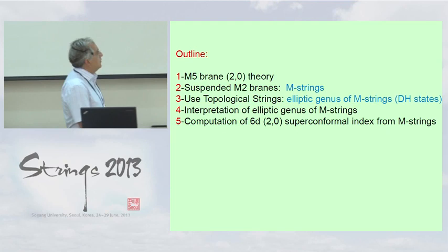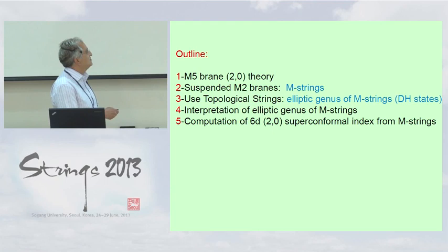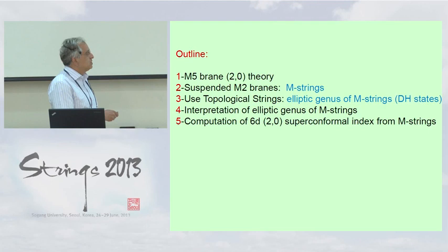The outline is: first I want to talk about aspects of the M5 brane and two-zero theory, which by now has been thoroughly reviewed in past talks so I will be very brief. I'll talk about suspending M2 branes between M5 branes — what I'm going to call M-strings — and then I'm going to use topological strings to compute the elliptic genus of these strings.